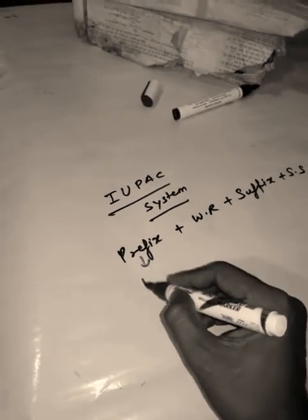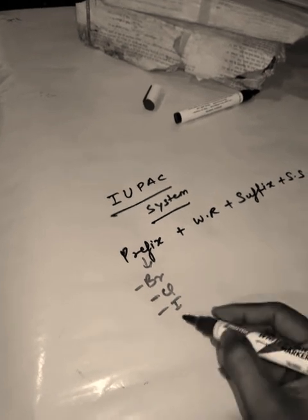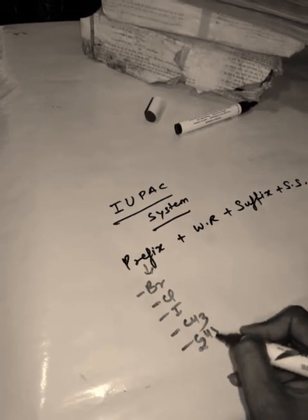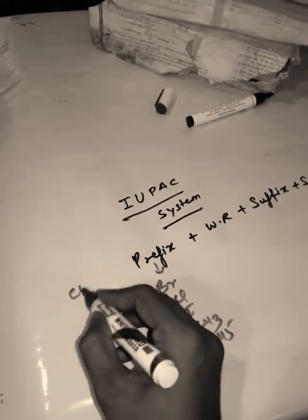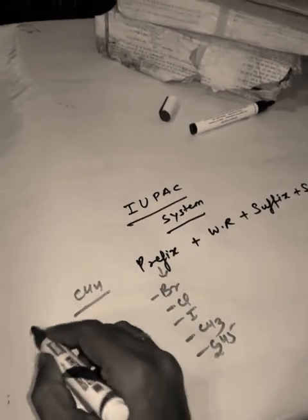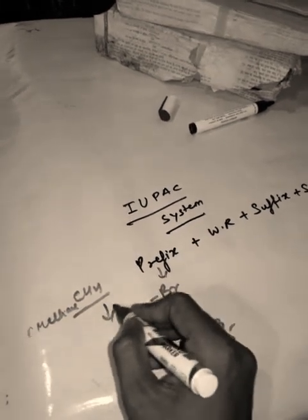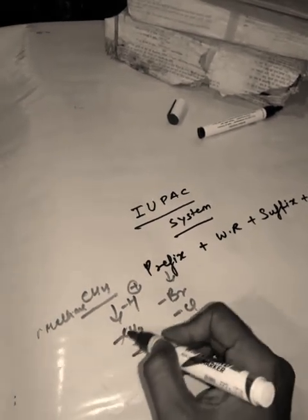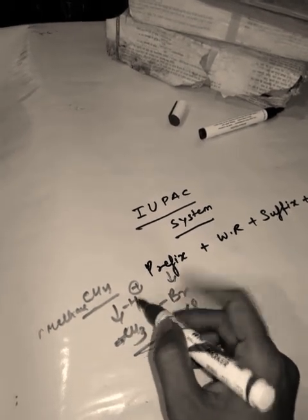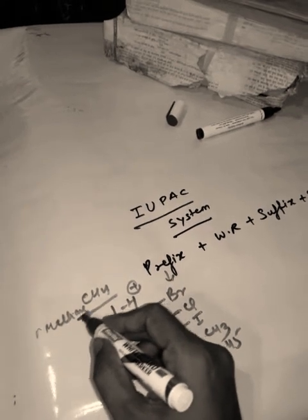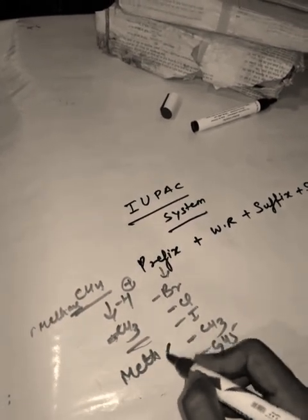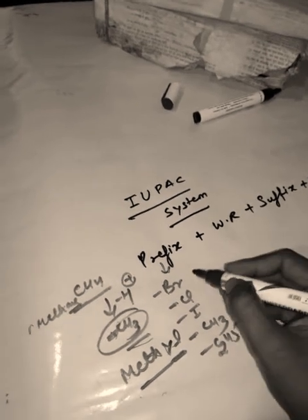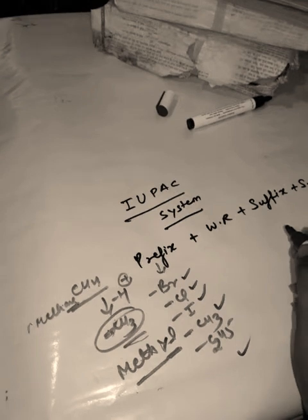The prefix includes substituents like bromo, chloro, iodo. For example, CH3 is methyl and C2H5 is ethyl. If you take methane and replace one hydrogen, the remaining group is CH3. When 'ane' is replaced by 'yl', it becomes methyl. So bromo, chloro, iodo are prefixes; methyl and ethyl are also prefix-type groups.